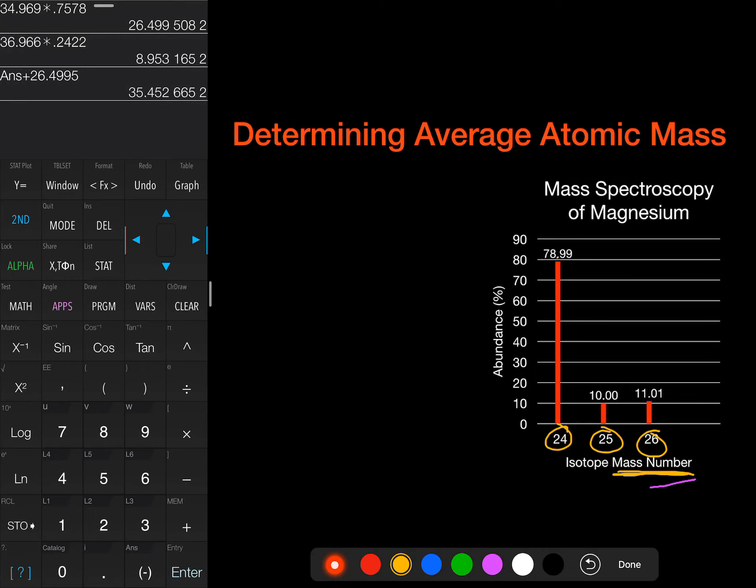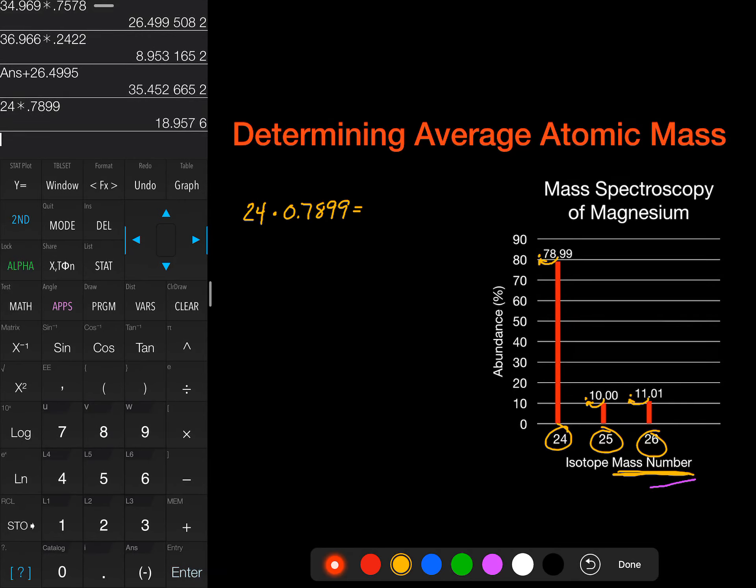We're going to make those into a decimal. So I'm going to move my decimal to the left, two places for each one of these. Then we'll go ahead and do our math. For magnesium 24, we're going to have 24 times 0.7899, and I end up with a value of 18.9576.